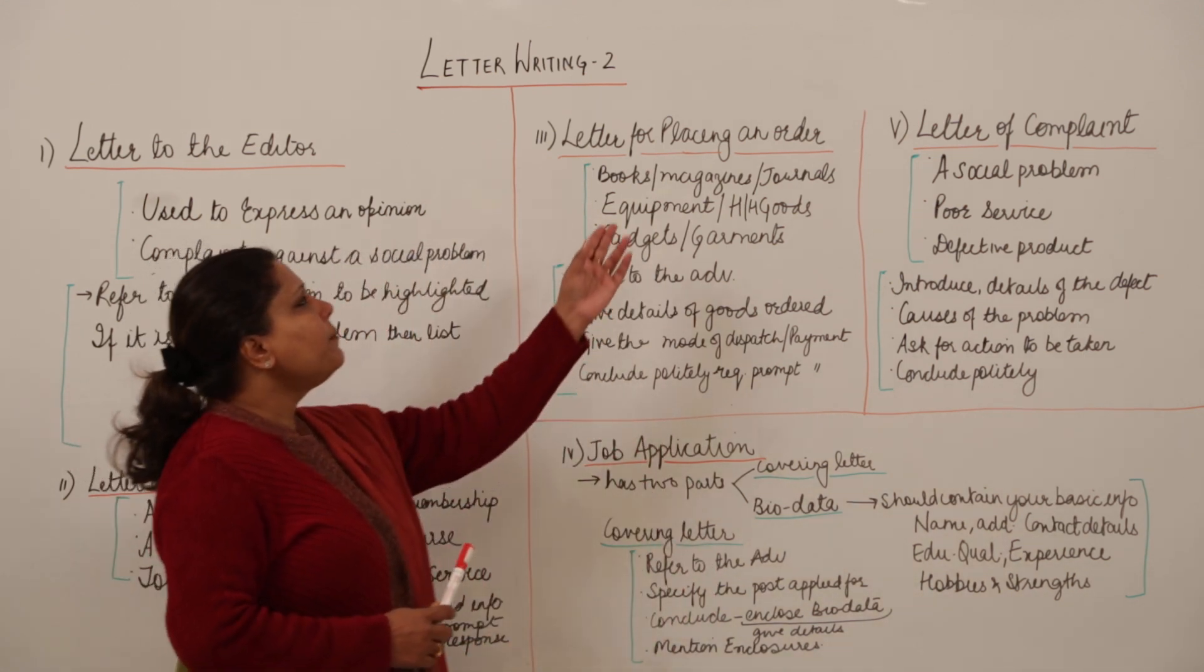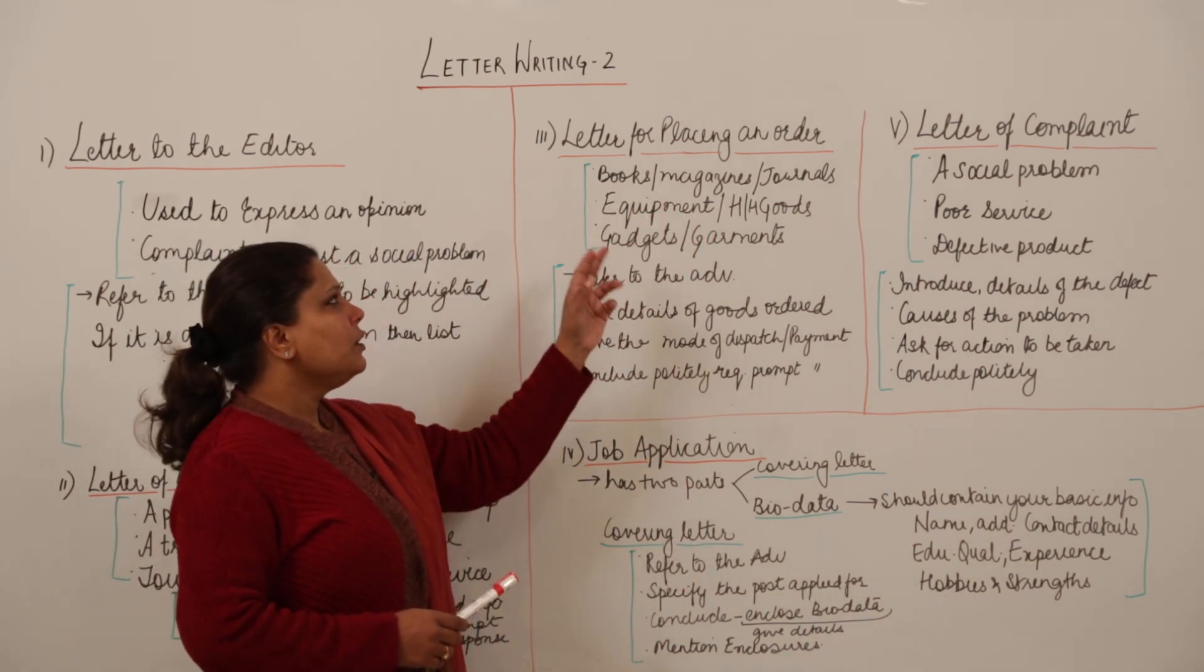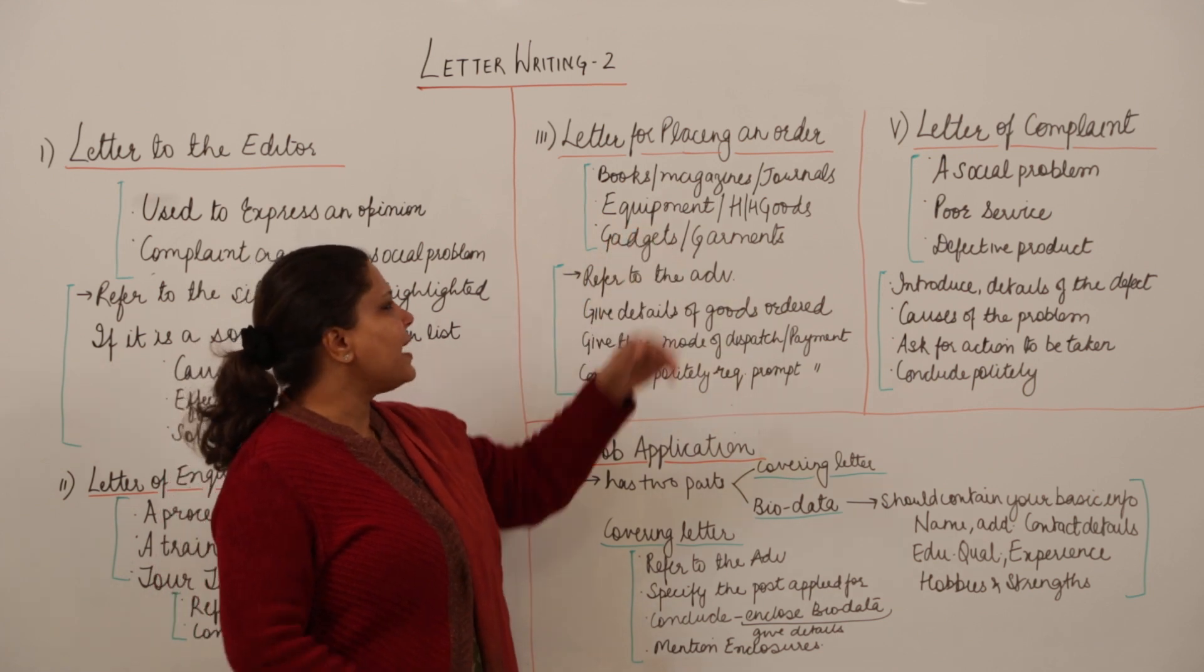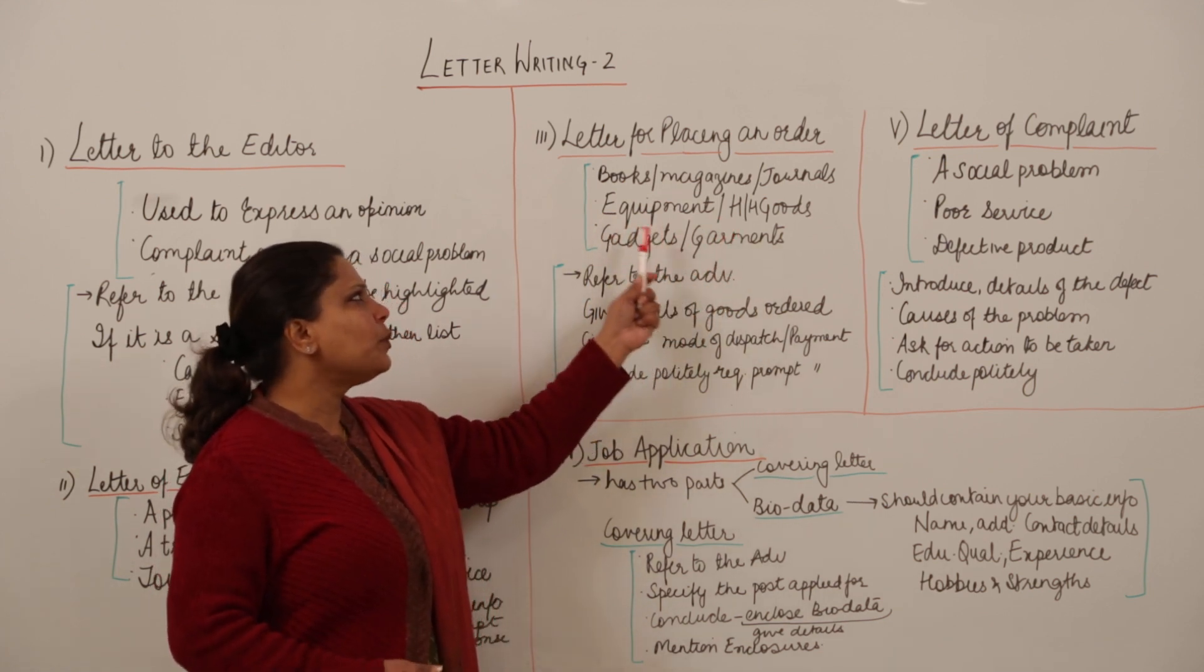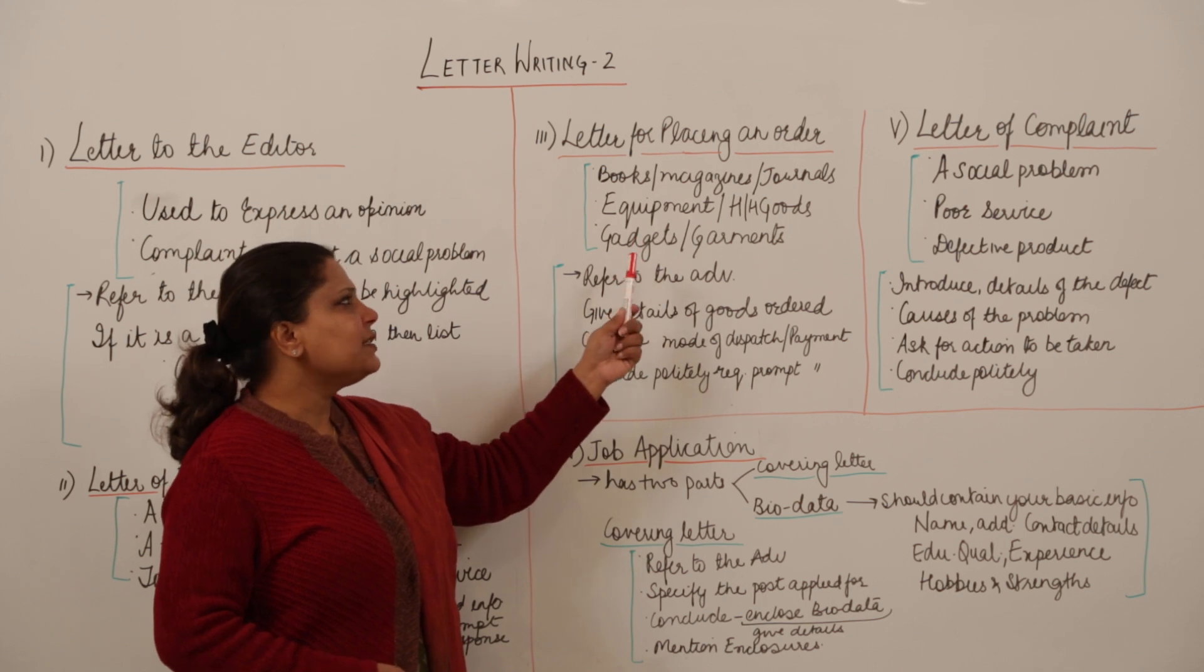The third type of letter is for placing an order. You might place an order for books, magazines, journals, equipment, household goods, sports equipment, gadgets or garments.